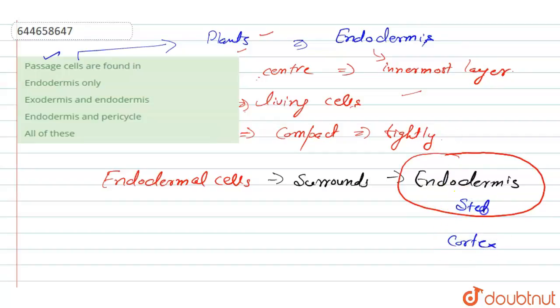Now this endodermis contains some cells called the passage cells, and these passage cells have the unique function that they allow the passage to the symplastic flow. Symplastic flow that occurs from outside to the inside of the cell.